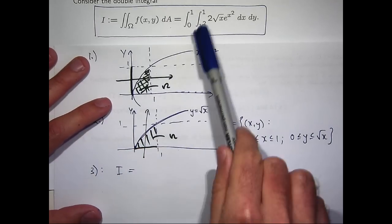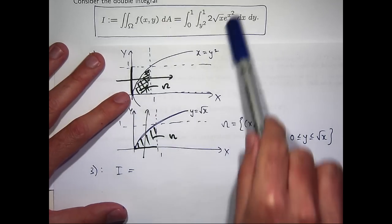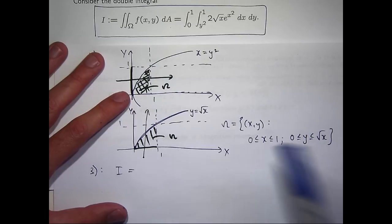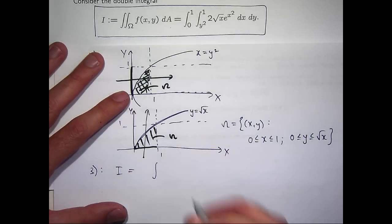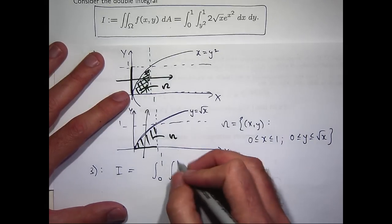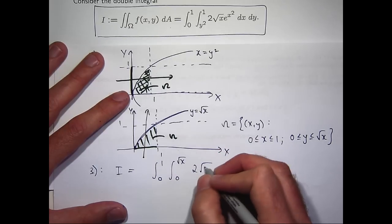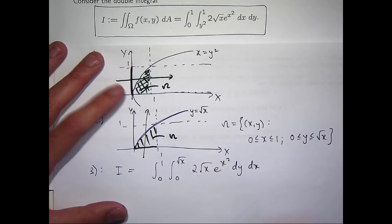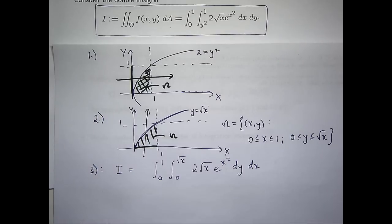So if I reverse the order of integration, I keep the same function, but I now get my limits of integration from my new description. So the constants go on the outside, the functions go on the inside, and I reverse my order of integration.